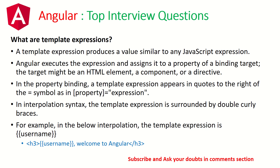What are template expressions? Template expressions produce a value similar to any JavaScript expression. Angular executes the expression and assigns it to a property of a binding target. In property binding, a template expression appears in quotes to the right of the equals symbol — property is written in brackets equal to expression. Interpolation is also an example of a template expression, along with property binding and data binding. These are all examples of template expressions.